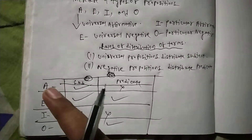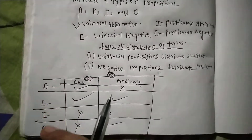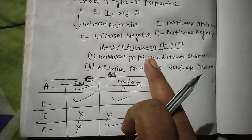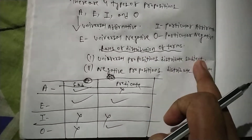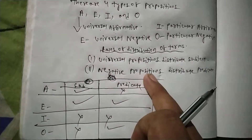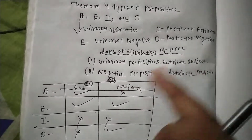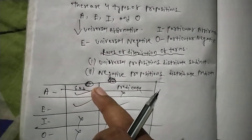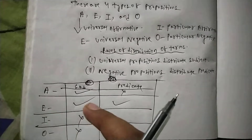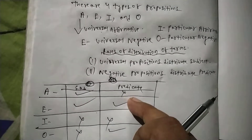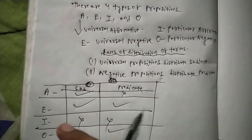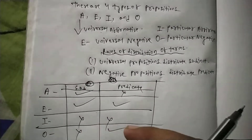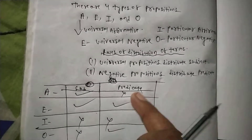In A, E, I, O propositions, by the rules of distribution of terms — universal propositions distribute subject and negative propositions distribute predicate — in A proposition the subject term is distributed, in E proposition both subject and predicate are distributed, in I proposition no term is distributed, and in O proposition only the predicate is distributed.